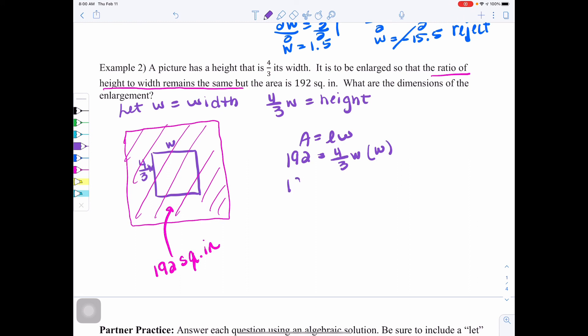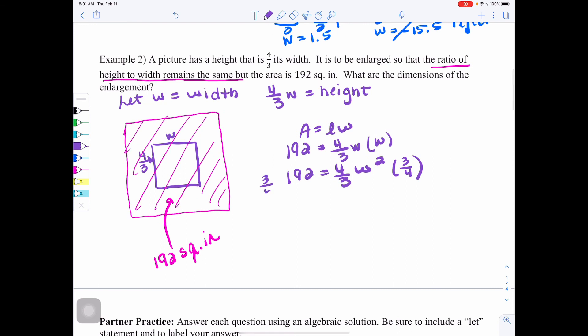So I get 192 equals 4 thirds W times W would be W squared. So we need to get that W squared alone by getting rid of the 4 thirds. To get rid of a fraction, you want to multiply by the reciprocal. So that would be 3 fourths here and 3 fourths here. So that would cancel out and you would get W squared equals, if I do 3 fourths of 192, I get 144.